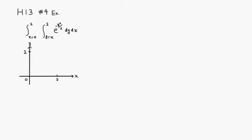Let's look at Hallmark 13, problem number 4 example. This is a similar problem. We have a double integral we want to evaluate. Initially, we're going to do an integral with respect to y first. But finding the antiderivative of e to the negative y squared over 2 is very difficult, so we want to switch the order of integration and try to do it with respect to x first.